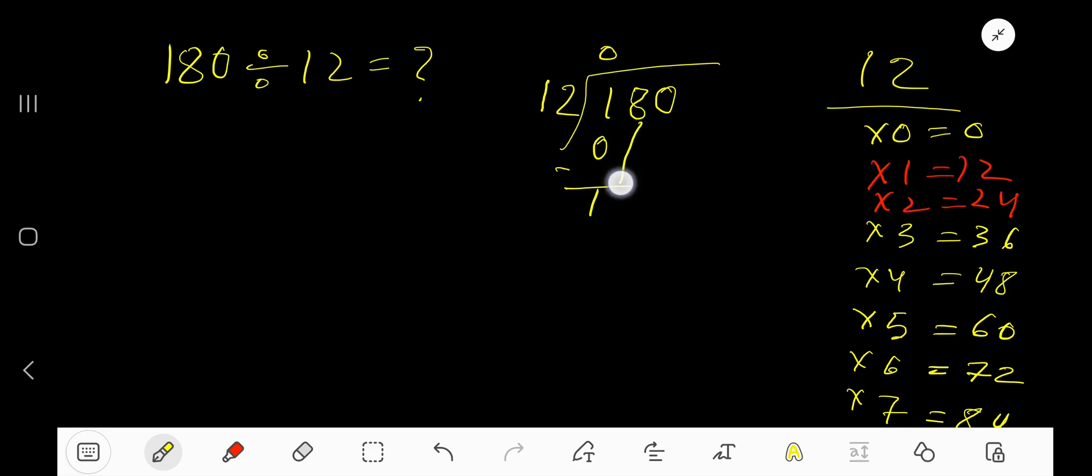Subtract. You are getting 1. Bring down this digit 8, so now our current dividend is 18. 12 goes into 18 how many times? 2 times is 24, which is greater. 1 time. 1 times 12 gives us 12.